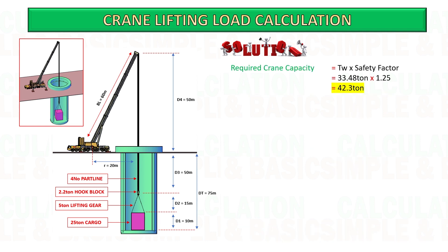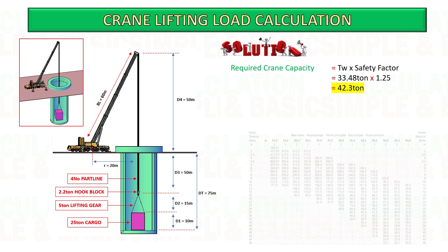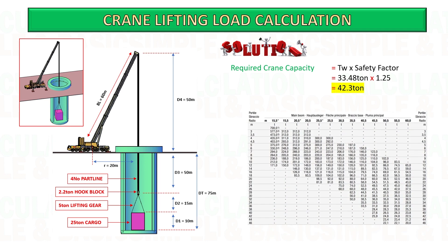Now you can select the required crane with a minimum capacity of 42.3 tons at 20 meter radius. See the load chart sample below.